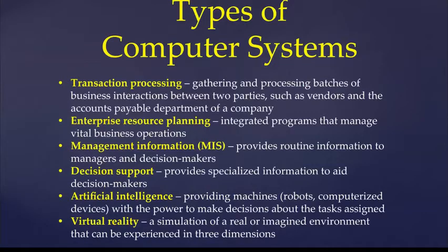Types of computer systems. There's transaction processing systems, which gather and process batches of business interactions between two parties, such as vendors and the accounts payable department of a company. Enterprise resource planning, which is integrated programs that manage vital business operations. Management information systems, or MIS, provides routine information to managers and decision makers. Decision support provides specialized information to aid decision makers.